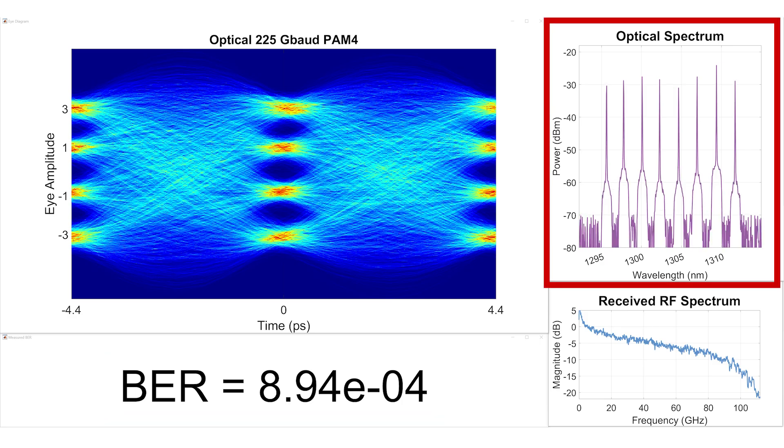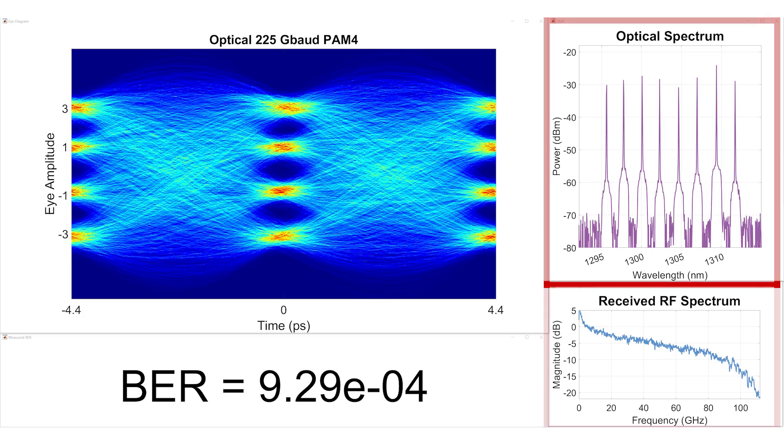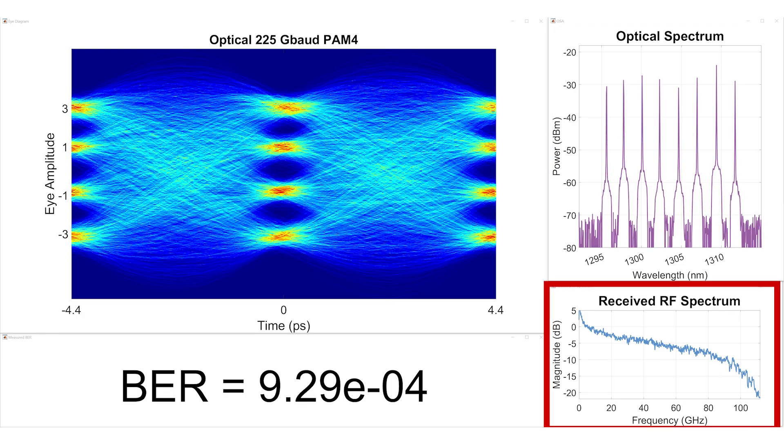The optical spectrum is also shown where all eight wavelengths are modulated. And finally, the received RF spectrum is also present.